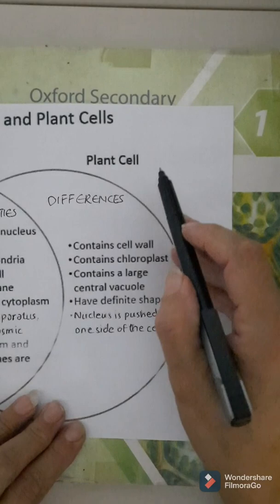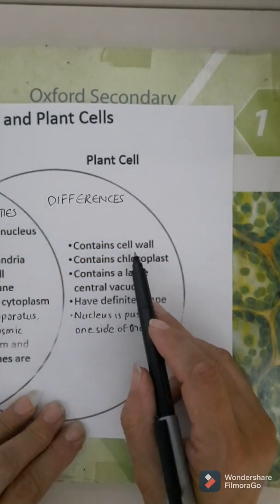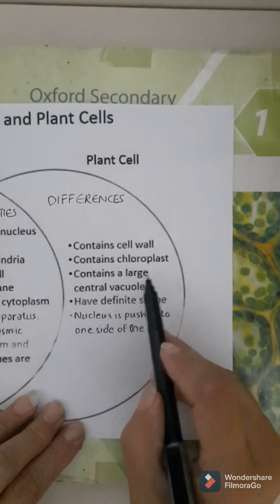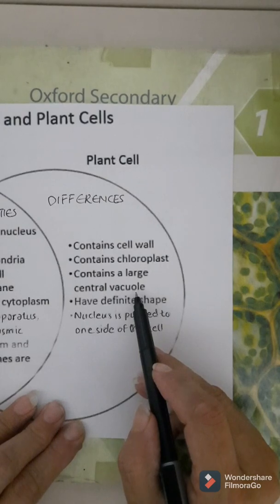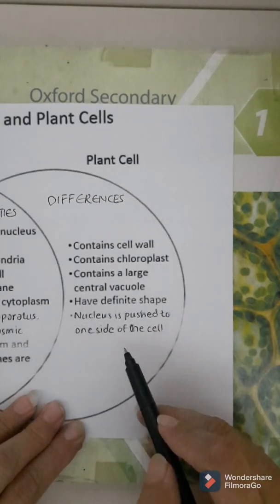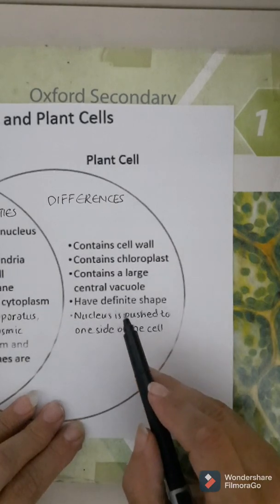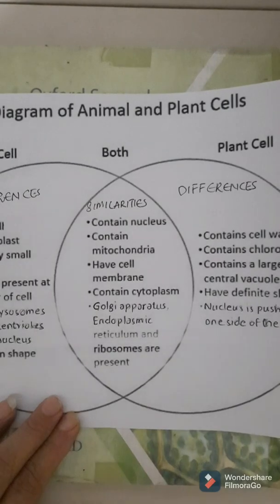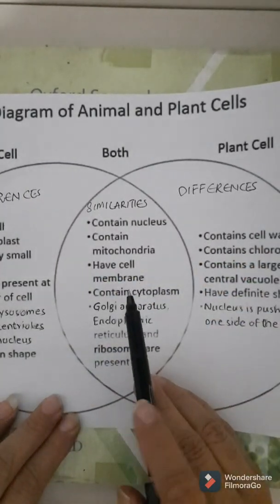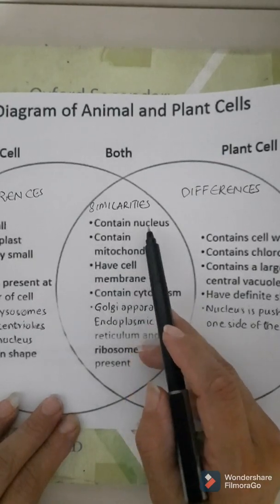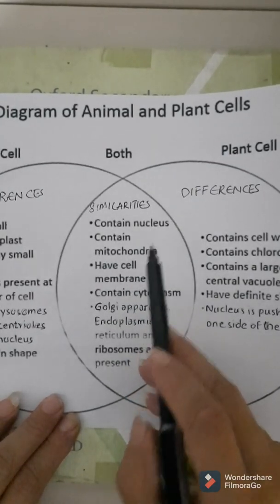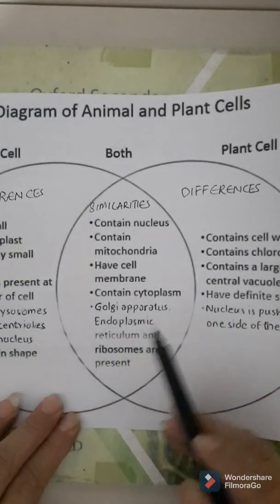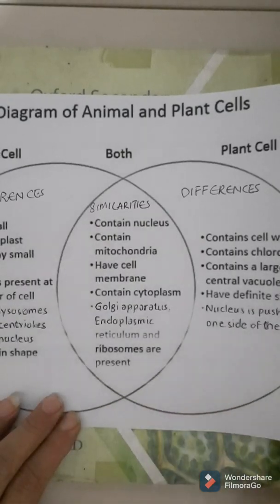How is a plant cell different from an animal cell? It contains cell wall, chloroplast, and one large central vacuole. Nucleus is pushed at one side of the cell and it is usually found in rectangular shape — it has a definite shape. The similarities between animal and plant cells: both have nucleus, mitochondria, cell membrane, cytoplasm, ribosomes, etc.